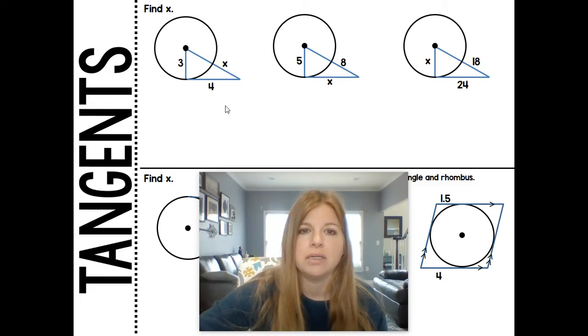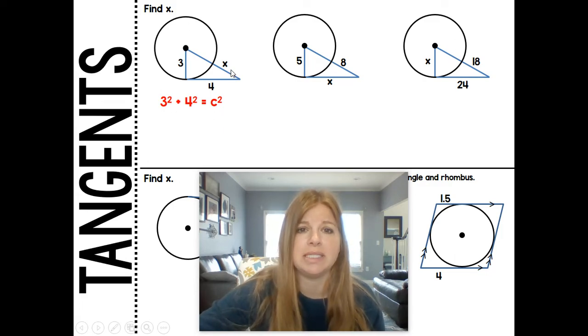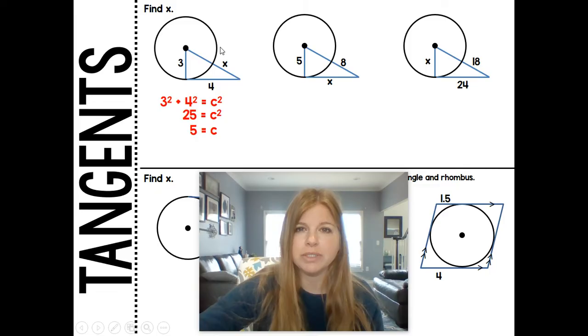But if I use the Pythagorean theorem to find the entire length, so let's say 3 squared plus 4 squared equals C squared. I'm going to talk about the entire hypotenuse here. We end up getting C is 5. So this entire length is 5. But how do we just get the X value here?